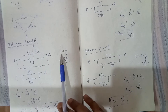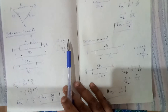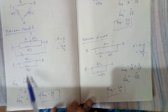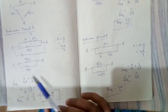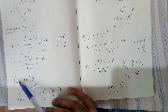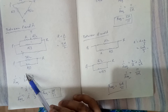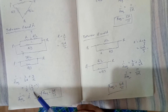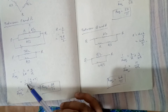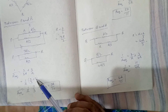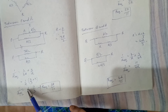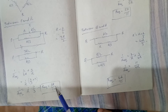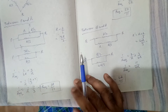These two series resistors give R plus R by two equals three R by two. Now three R by two and R by three are in parallel, so one by R equivalent equals two by three R plus three by R, which equals eleven by three R. Therefore R equivalent between P and R is equal to three R by eleven.